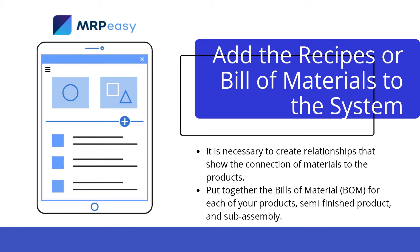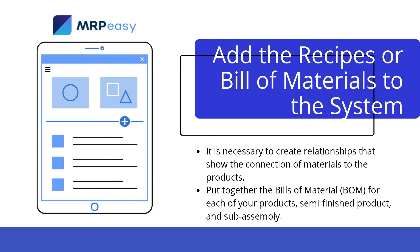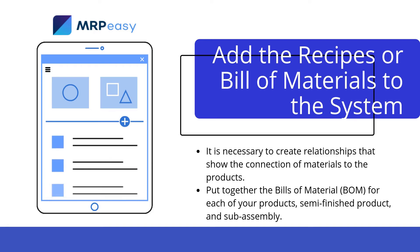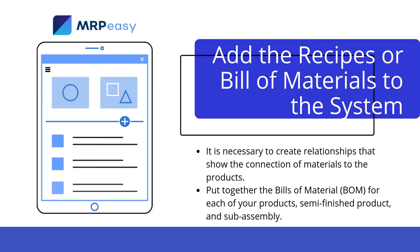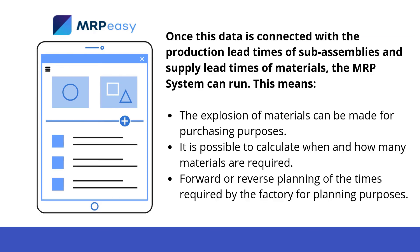Once the items are in the MRP system, it is necessary to create relationships that show the connection of materials to the products. Put together the Bill of Material, or BOM, for each of your products, semi-finished products, and subassemblies. Each unit of the finished product is made up of the sum of pieces added until the final product is ready. The BOM should also include scrap and waste quantities for better planning and accurate consumption.